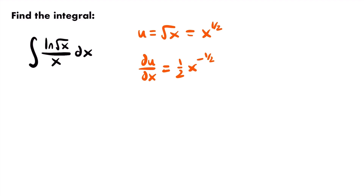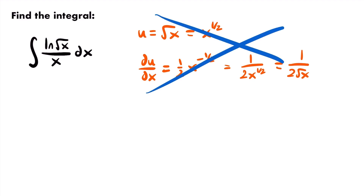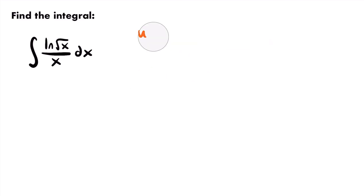Since the power of x is negative, we move it to the denominator to make the exponent positive, giving us one divided by two times x to the one-half power, or one divided by two times the square root of x. Do we see that anywhere in our integral? No, we don't. So this isn't going to work — our first attempt at u-substitution fails because the derivative of our chosen u cannot be found in the integral.